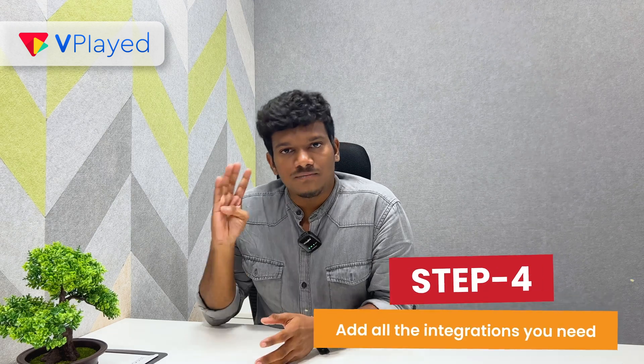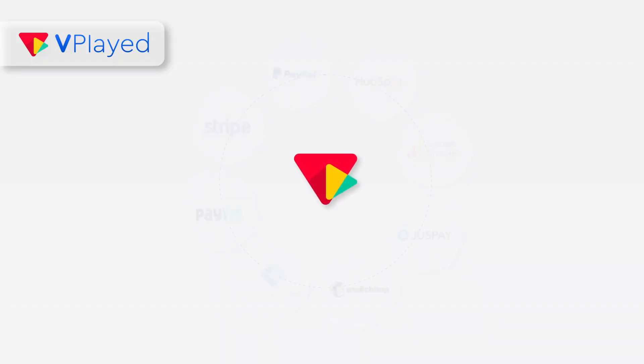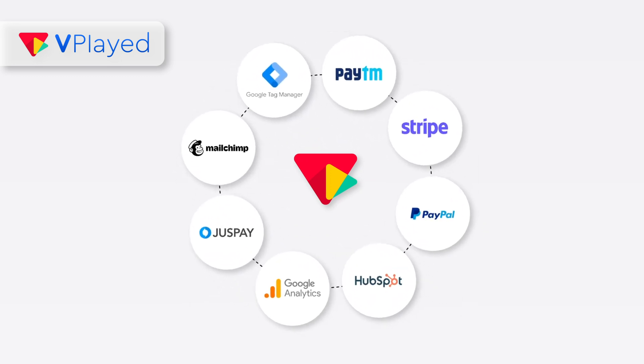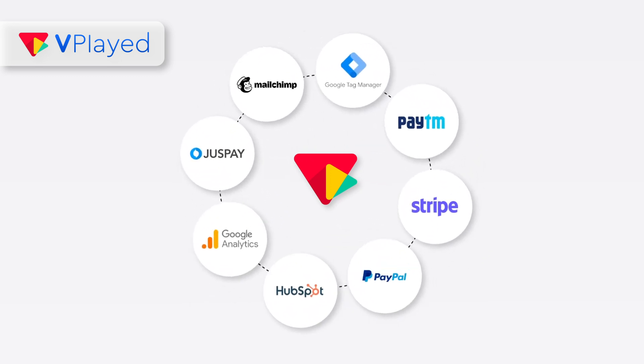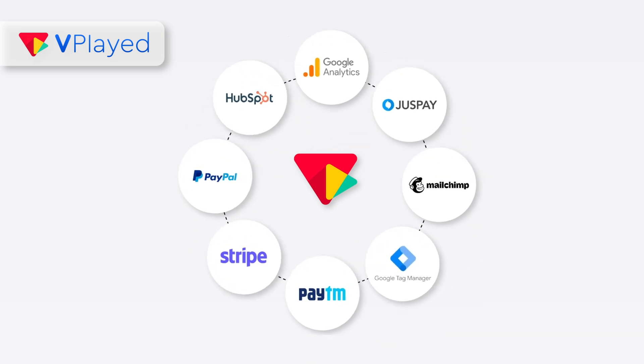Now we come to Step 4: Add all the integrations you need. We integrate with 200-plus popular apps and software, so you can keep working with tools you already use. Features and integrations are done, but here's the best part — Weplayed is not just customizable, it gives you complete platform ownership. They give you access to the source code, putting you in the driver's seat.